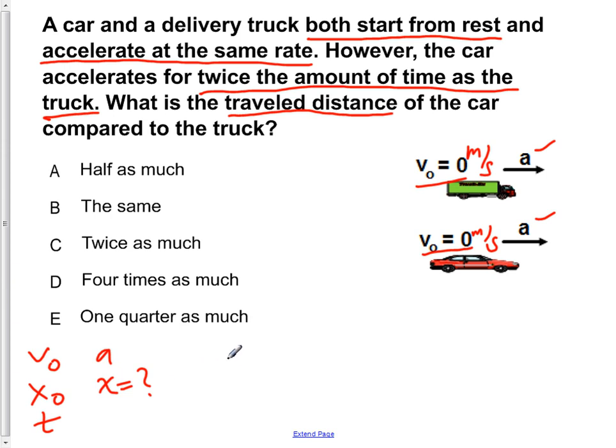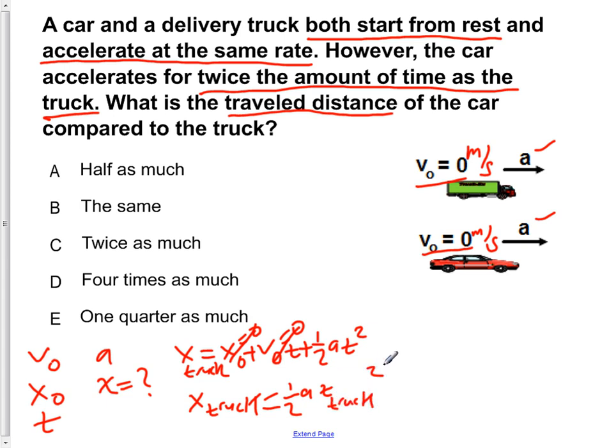The equation that fits this criteria is x equals x-naught plus v-naught t plus one-half A t squared. Now we're going to do this for the truck first. We know that its initial position is zero, so we can ignore that. And its initial velocity is also zero, so we can ignore that. So we see that the distance the truck goes is equal to one-half A t truck squared.